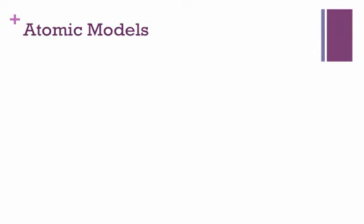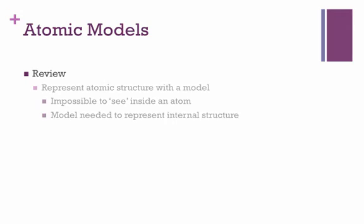To get us going, we'll start with a quick rundown of why atomic models are so necessary for a thorough understanding of chemistry. The goal of an atomic model is to represent the atomic structure — the inner workings of an atom — with a model. We need this because it's impossible to see inside of an atom. Light needs to reflect off things to enter our eyes, and there's simply nothing inside of an atom for light to reflect off of.